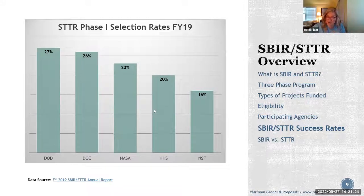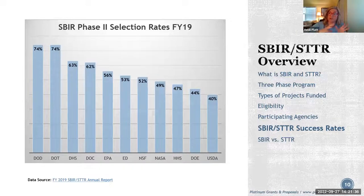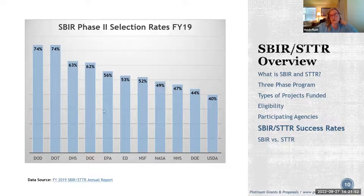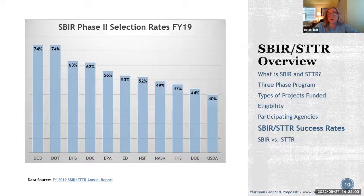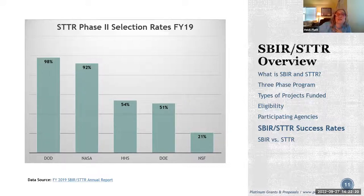Phase 2 selection rates go up a little because the pool of applicants has been narrowed — only those who completed a Phase 1 normally submit a Phase 2, unless it's a direct Phase 2. With fewer people submitting, the percentage is higher. If you prove feasibility, stay in touch with your program manager, and put together a good Phase 2 plan based on your Phase 1 results, you'll be well positioned. STTR Phase 2 is still competitive across NIH, Department of Energy, NSF, DOD, and NASA.